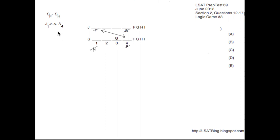That inference about H not being on S1 is nice to have, though not as useful because it doesn't connect with the J1-S4 rule. This diagram is sufficient to answer the questions, but I like to take things further and build multiple main diagrams. The J1-S4 rule combined with the restriction that F cannot be on S4 gives us a domino effect of inferences.